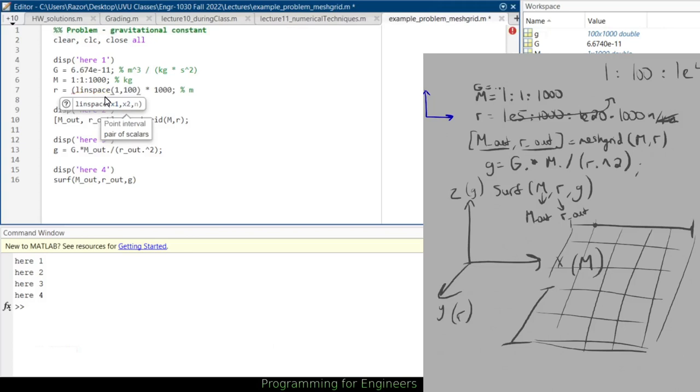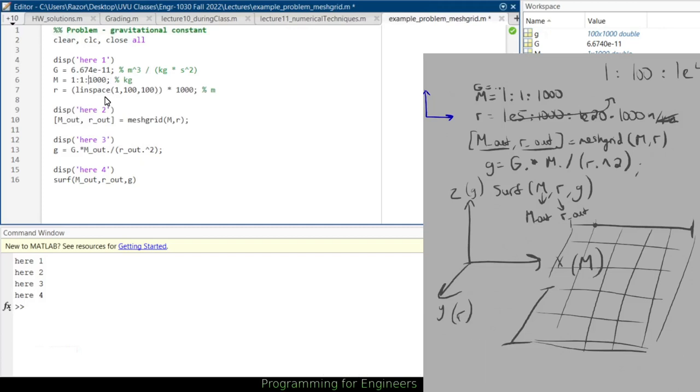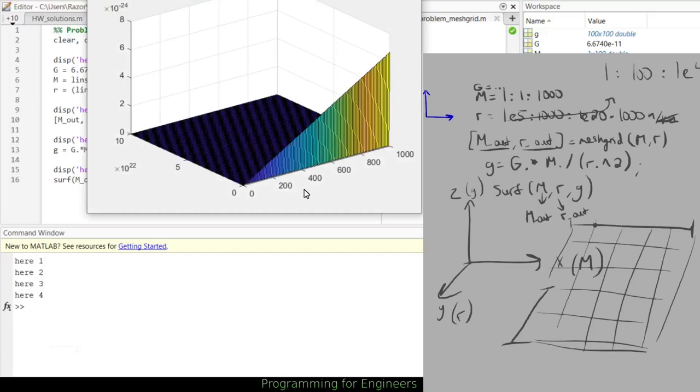So I'll use linspace 1 to 100 and just say 100 points here instead. See if that's enough to give me something more viable. And we'll increase this again 1e5 to 1e20, see if that's having any problems.